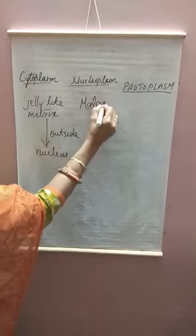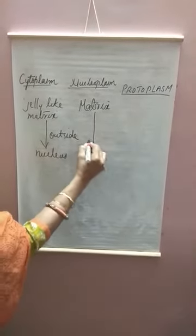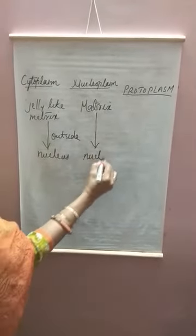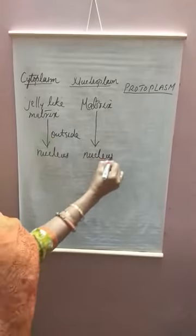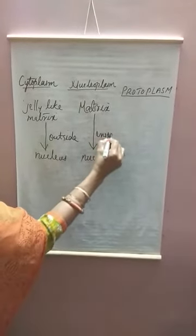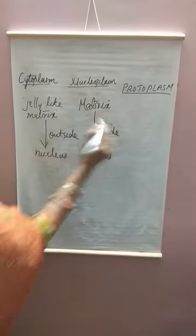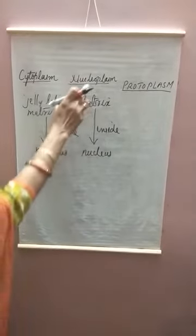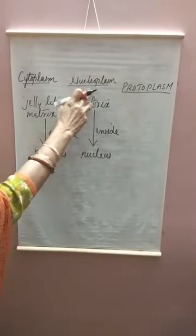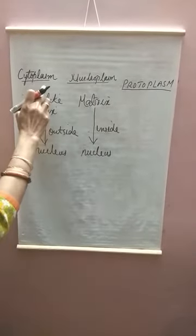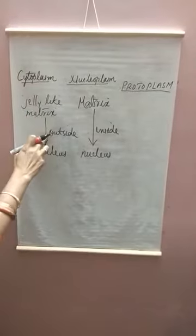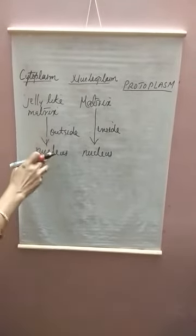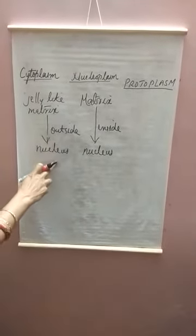Nucleoplasm is the matrix present inside the nucleus. So cytoplasm is present inside the cell but outside the nucleus, while nucleoplasm is present inside the nucleus.